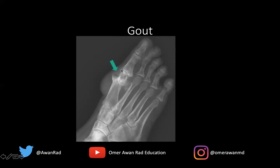Notice that the erosion — this is the first MTP joint right here. The erosion is appearing just outside the joint, not really in the joint, but right around and outside the joint along the first metatarsal head. That's a really characteristic feature of gout that we don't see in many other inflammatory arthropathies — this concept of juxta-articular erosion.